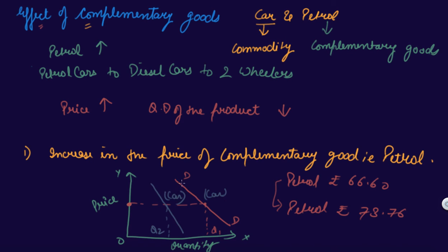So, with the increase in the price of the complementary good — that is, petrol — the quantity demanded of the car has decreased. This is the effect of an increase in the price of a complementary good.